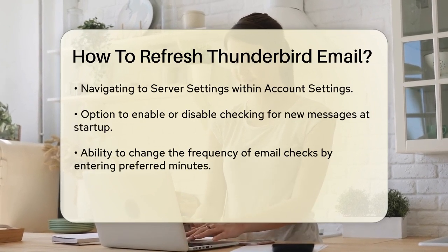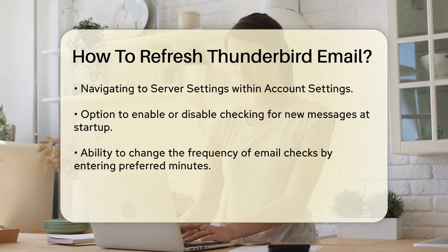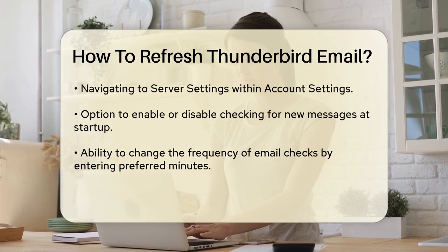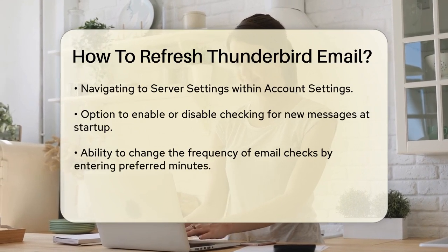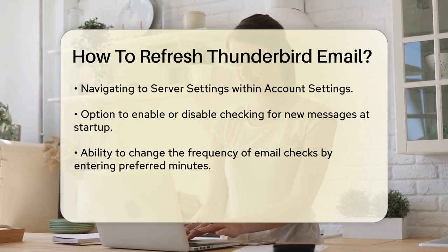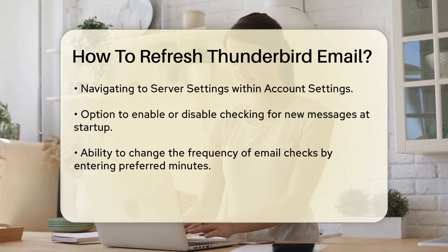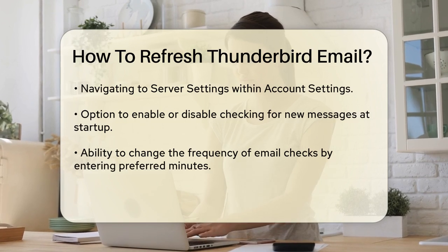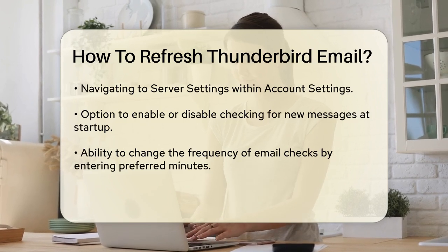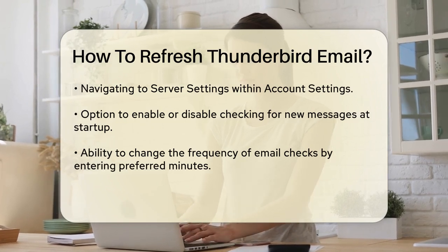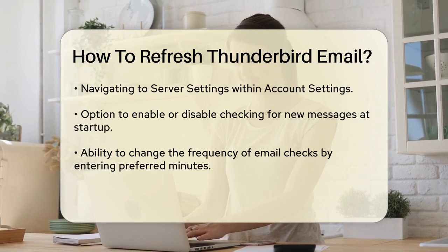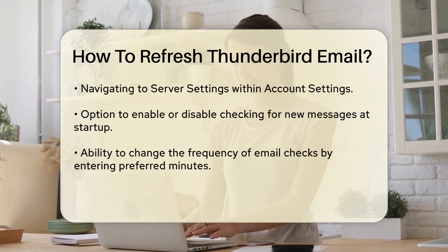Once you're in the Account Settings window, click on Server Settings. Here, you can tell Thunderbird when to look for new mail. If you want Thunderbird to check for new messages at startup, make sure the 'Check for new messages at startup' checkbox is selected. If you don't want this, simply deselect it.